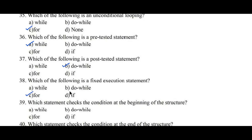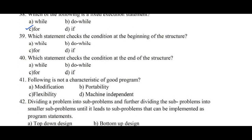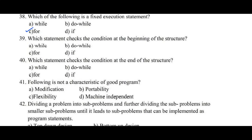Question number 38: Which of the following is a fixed execution statement? Option A. While, B. Do-while, C. For, D. If. So here C, For loop, is the right answer because whenever there are a fixed number of iterations to be executed known by the programmer, in that situation we have to use for loop.